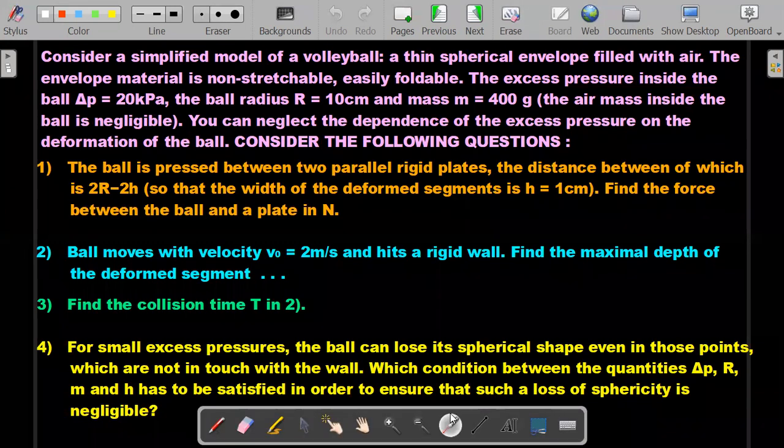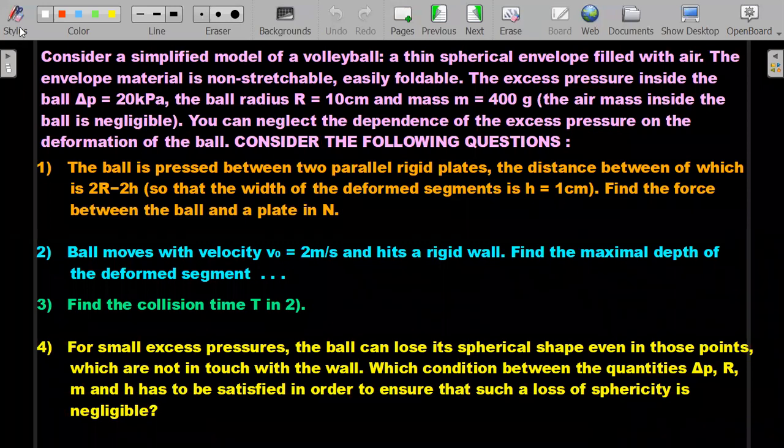Let me read it out for you. Consider a simplified model of a volleyball: a thin spherical envelope filled with air. The envelope material is non-stretchable and easily foldable. The excess pressure inside the ball Δp equals 20 kilopascals, the ball radius R is 10 centimeters, mass m is 400 grams, and air mass inside is negligible. You can also neglect the dependence of excess pressure on the deformation of the ball—no thermodynamics being used. Consider the pressure uniform throughout the compression.